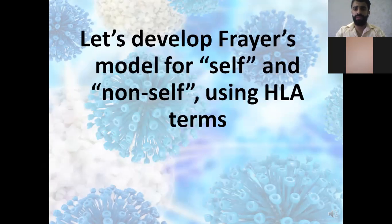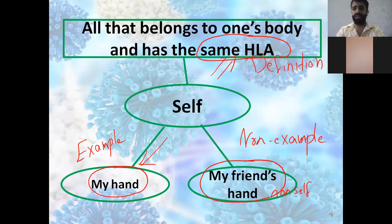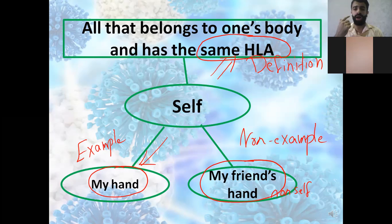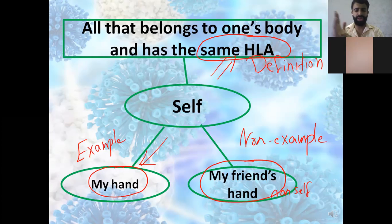Let's define the self and non-self using HLA terms. The self is all that belongs to one's body and has the same HLA — for example, my hand, my nose, my eyes, my lungs, my liver, my pancreas. A non-example of the self would be my friend's hand or my friend's kidney — those are classified as non-self.